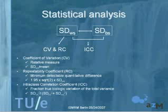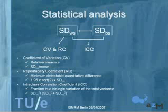When looking at reproducibility there are several ways to do statistics. We calculated three commonly used reproducibility statistics. The two main important values to assess are the standard deviation within subjects and the standard deviation between subjects. From the within-subject standard deviation you can calculate the coefficient of variation, which is a relative measure. You can also determine the repeatability coefficient, which is the minimum detectable quantitative difference — both according to Bland-Altman. Furthermore, we calculated the intraclass correlation coefficient (ICC), which is the fraction of true biological variation of the total variance, done according to Tofts.